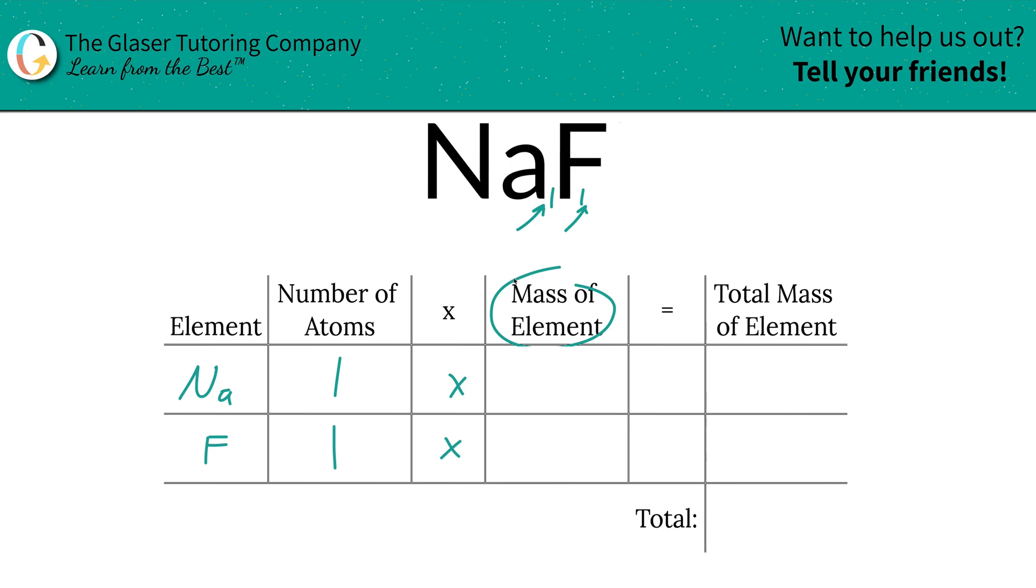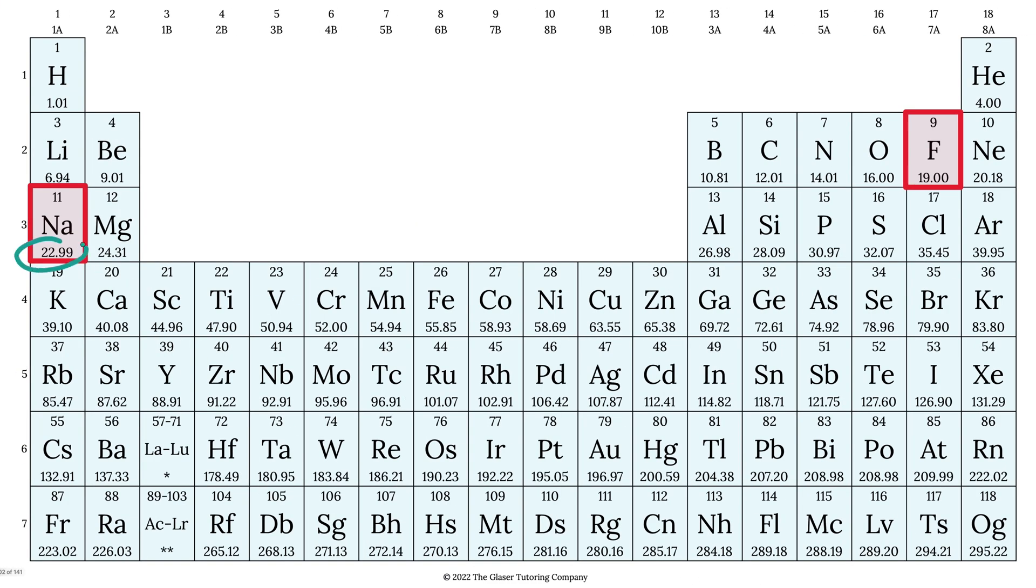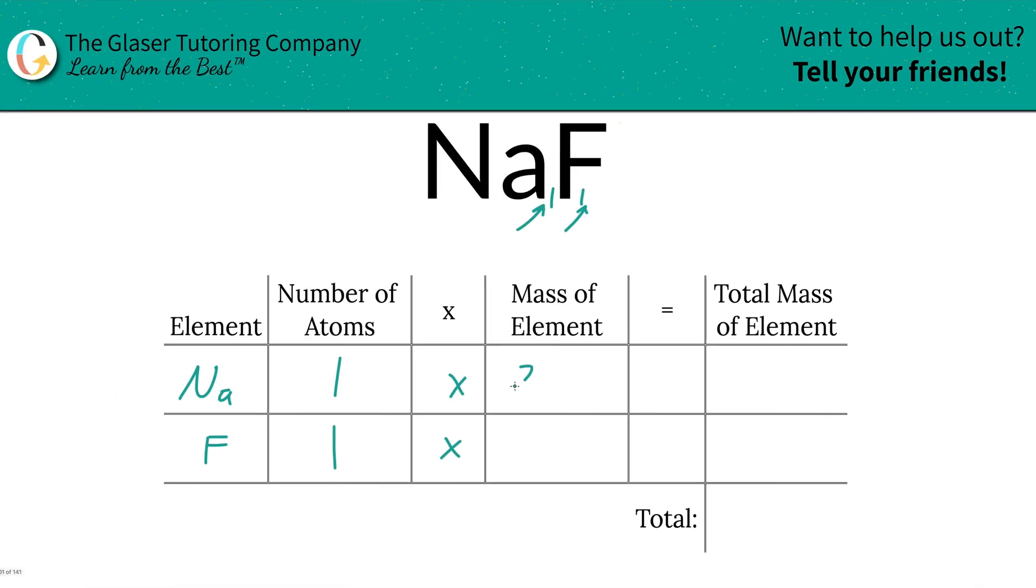We're going to take those number of atoms and multiply it by the mass of each element. These masses are always found on the periodic table, so let's take a look. Sodium's mass is 22.99. Fluorine is 19. So that's what we're going to write down. 22.99 for sodium, and then fluorine was 19.